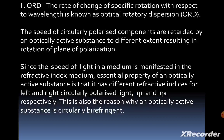The speed of circularly polarized components is reduced — retarded — whenever an optically active substance is present, resulting in rotation of the plane of polarization to different extents. Since the speed of light in a medium is manifested in the refractive index, an essential property of an optically active substance is that it has different refractive indices for left and right circularly polarized light, eta-L and eta-R respectively. This is also the reason why an optically active substance is said to be circularly birefringent.